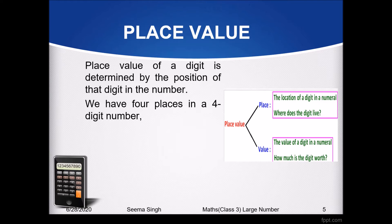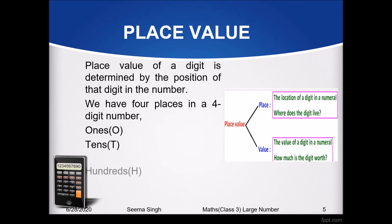There are four places in a four-digit number, just as there are three places in a three-digit number. The four places in a four-digit number, starting from the right side, are: ones, tens, hundreds, and thousands.